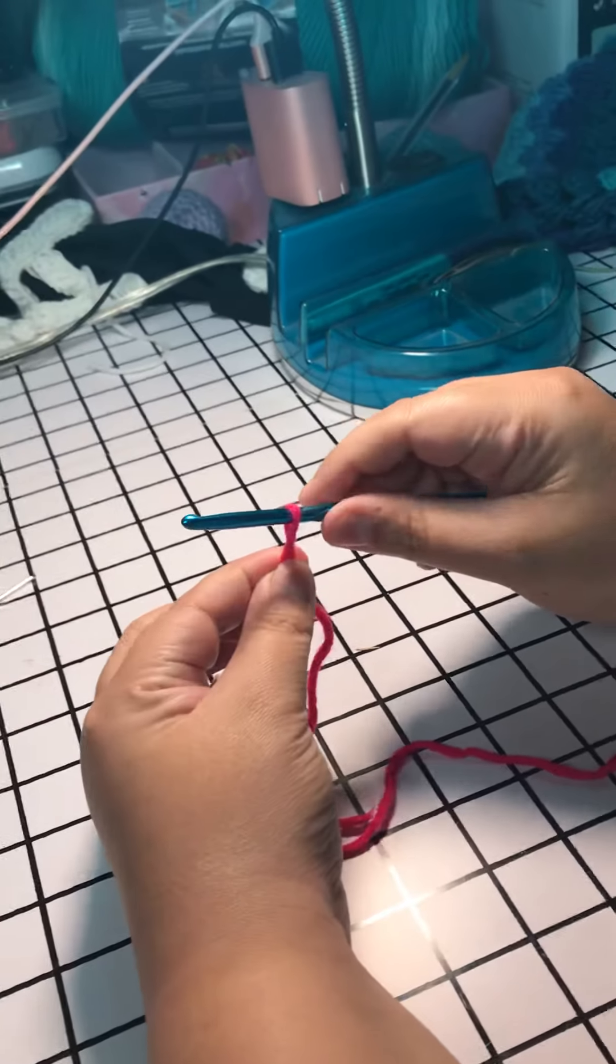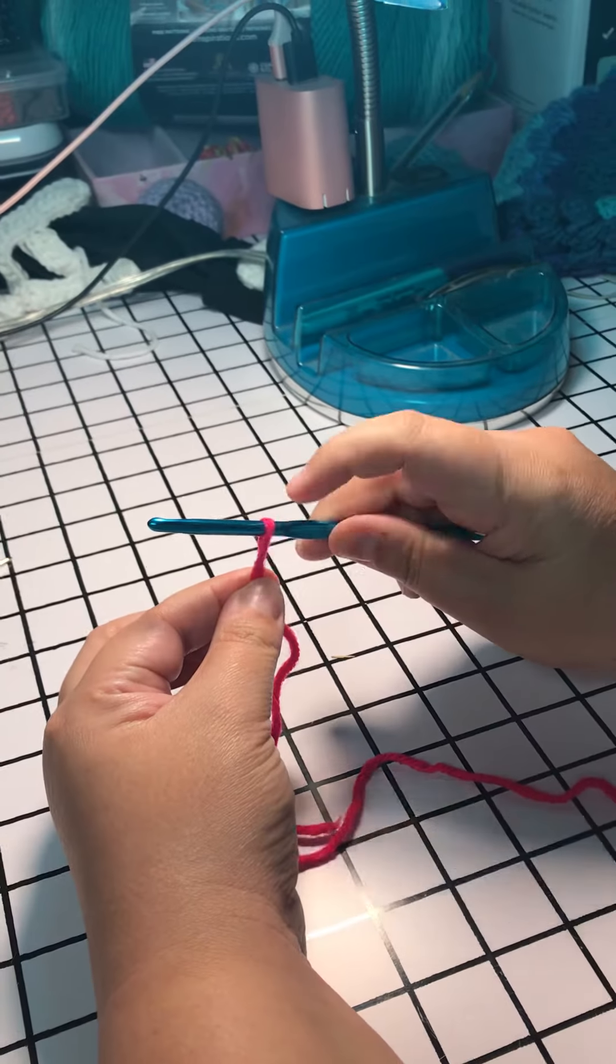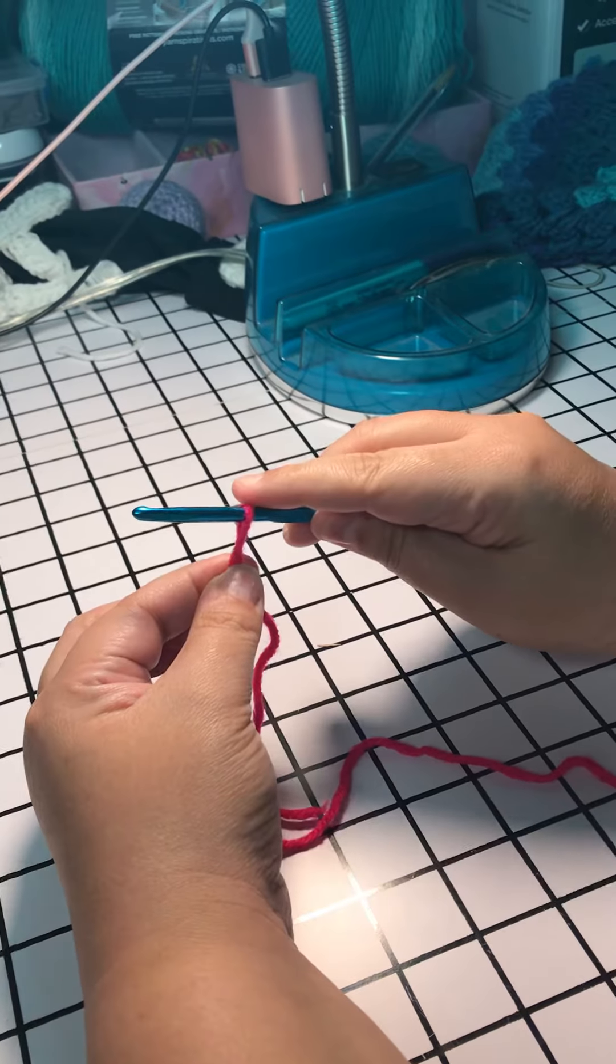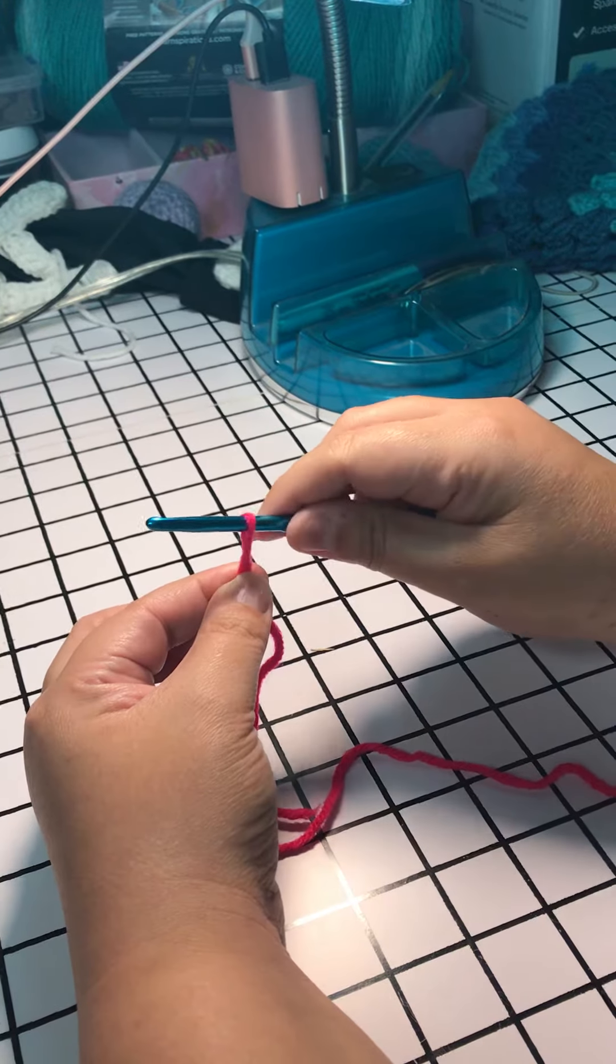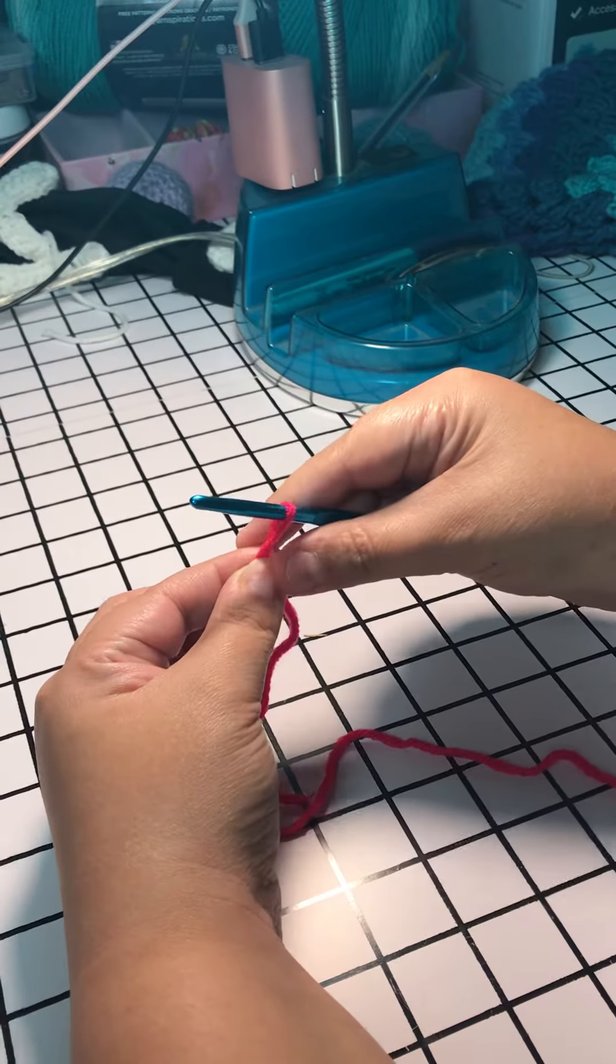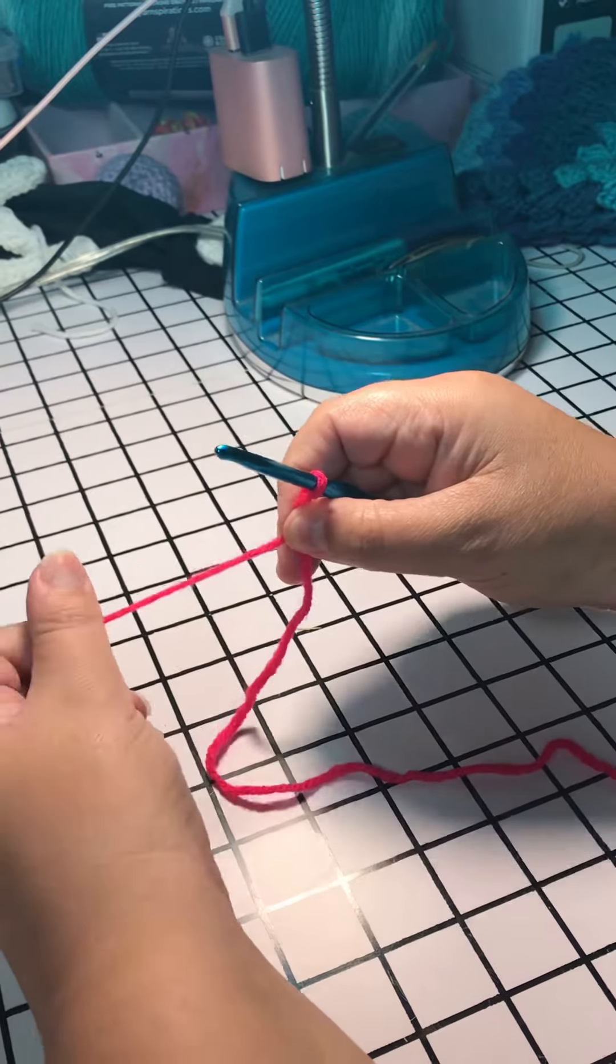So right now I'm holding the hook in my right hand with the loop of the ribbon that I made with my yarn on the hook, holding the cross points with the left hand. Now keeping it on the hook, I'm going to switch and grab that cross point with my right hand.